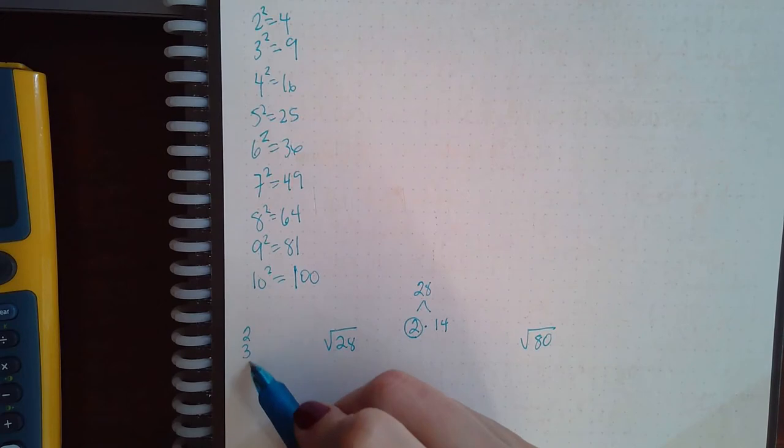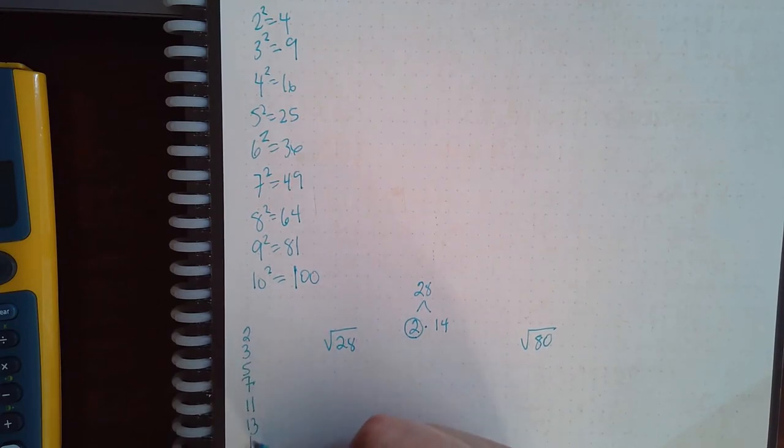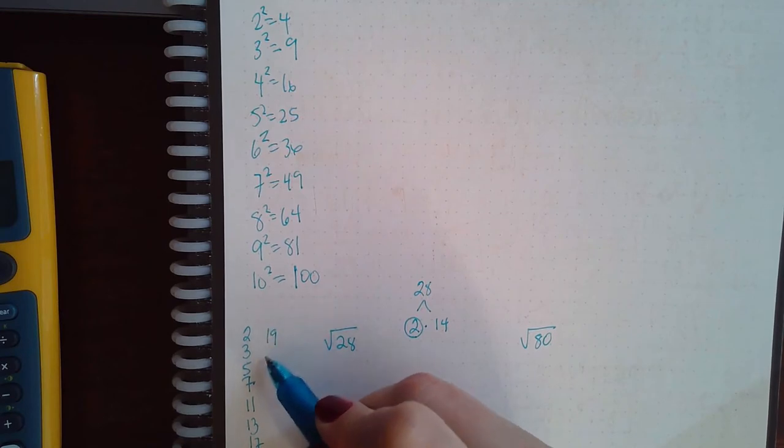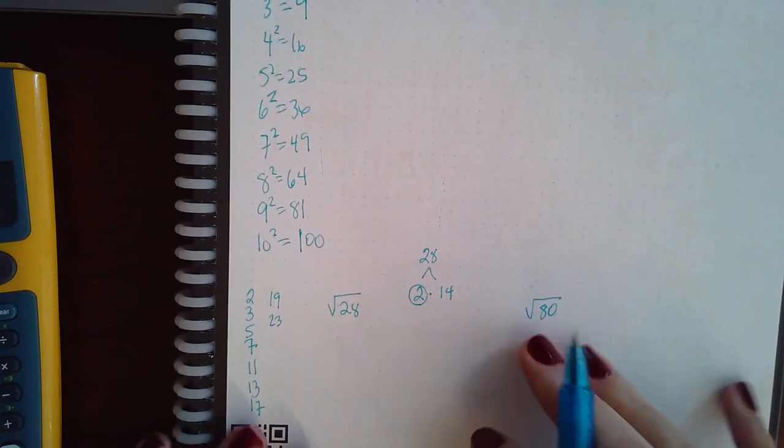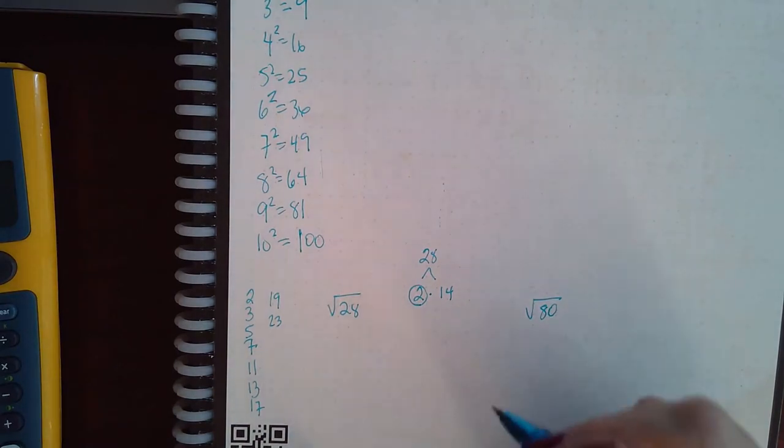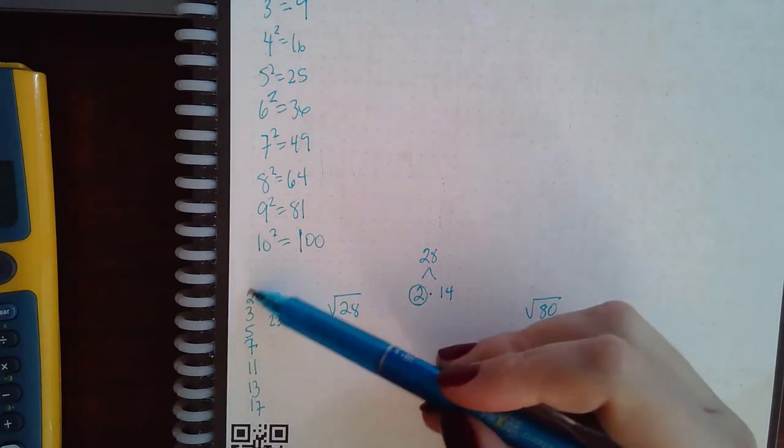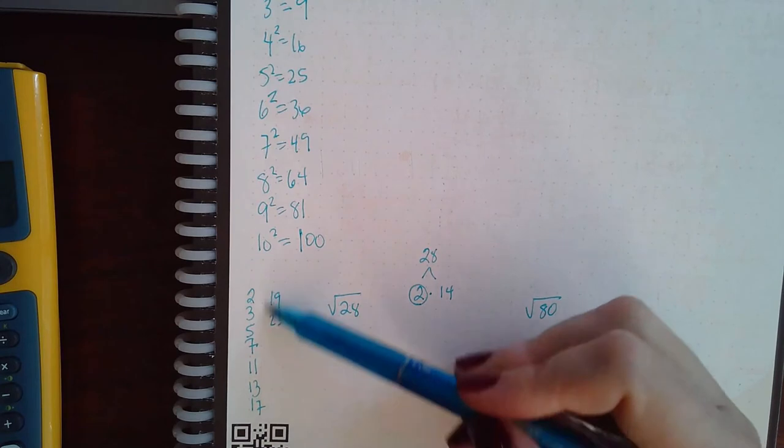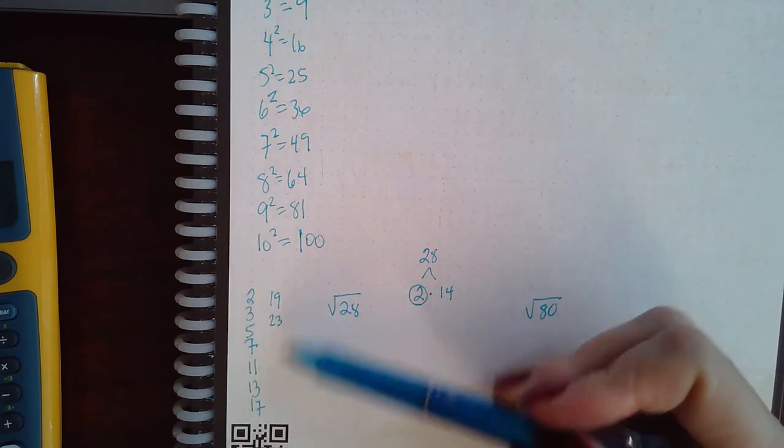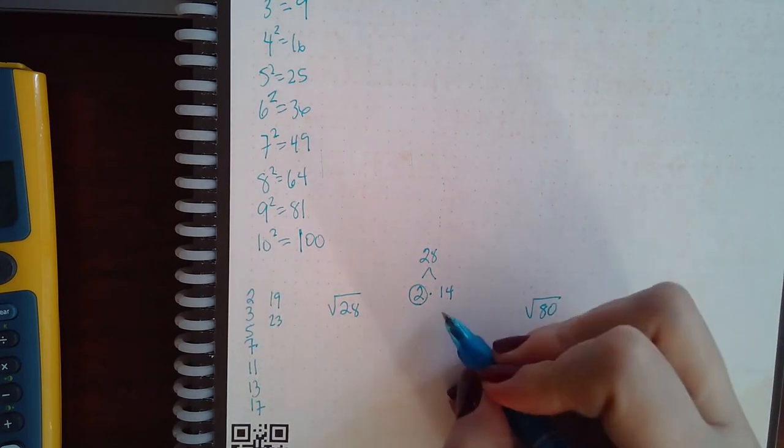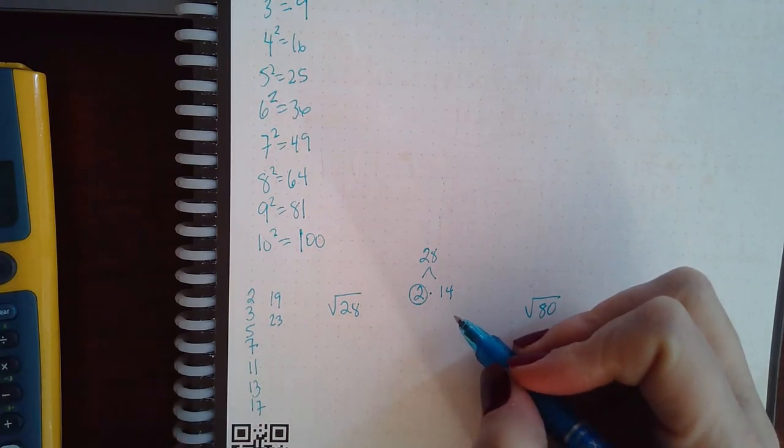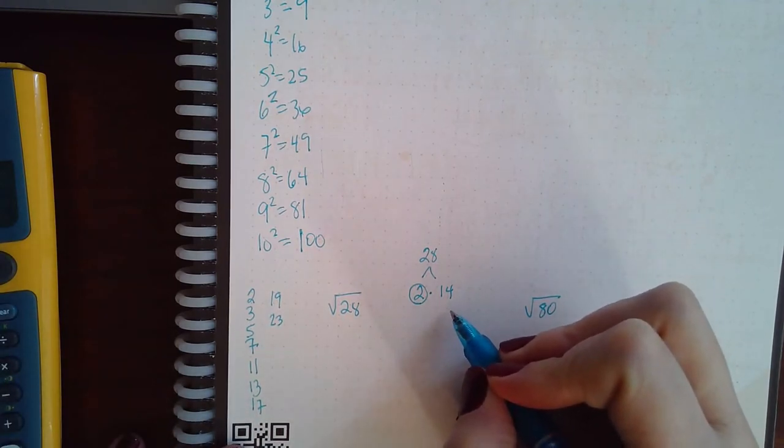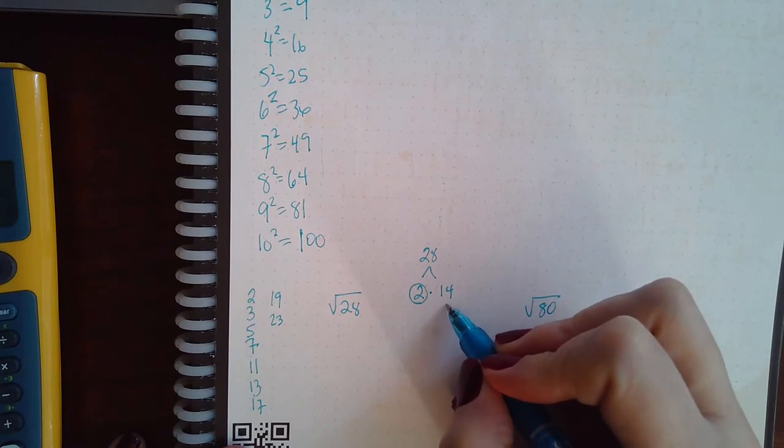My prime numbers are 2, 3, 5, 7, 11, 13, 17, 19, 23, and that's usually as far as I go. Usually just these are enough to do the problem, but every now and then you might see one of these larger numbers. So 14 is not on the list—it goes from 13 to 17—so that means 14 is not prime.